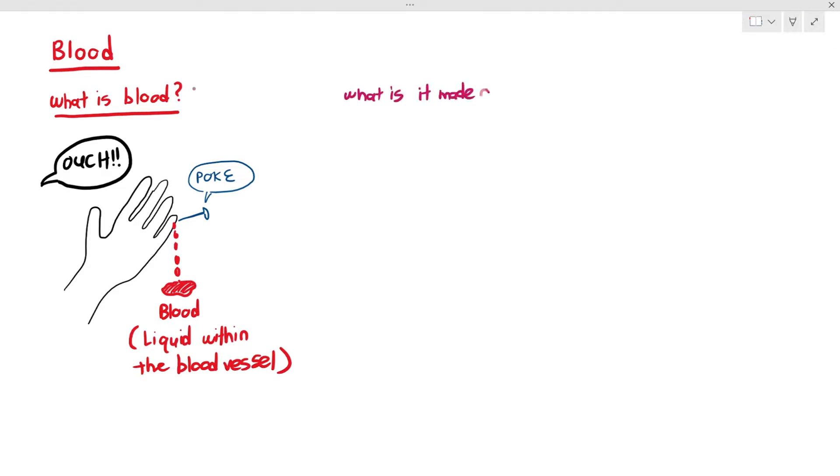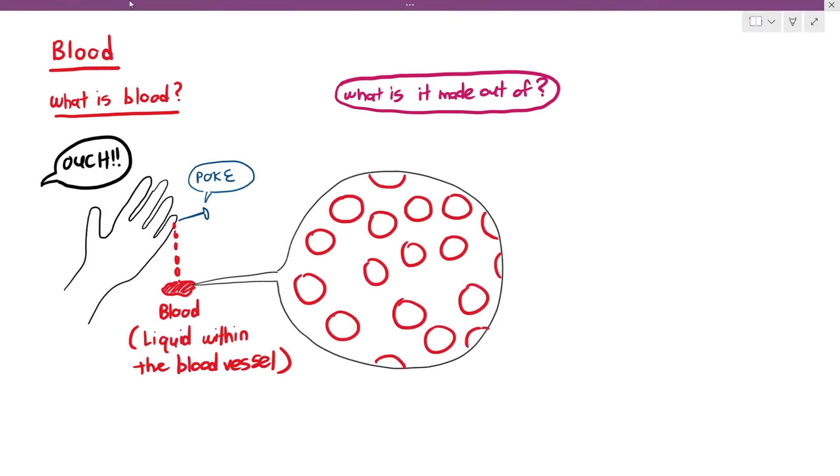what exactly does the blood contain? What is it made out of? If we were to examine blood under microscope, we will notice this weird-looking array of substances or cells which are floating around in a liquid.